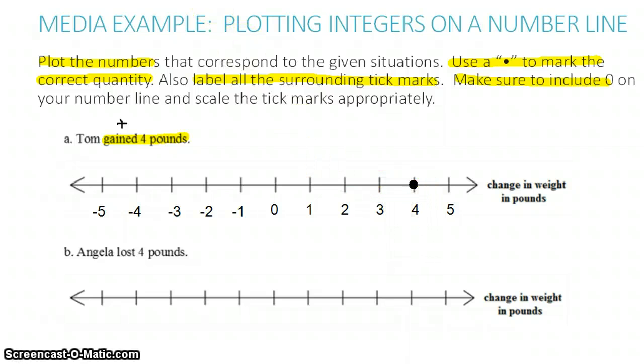Let's try the next one. Angela lost four pounds. Notice here the change in weight labeling is identical. But in this case, Angela lost four pounds instead of Tom who had gained five pounds. So this is going to be a negative number.